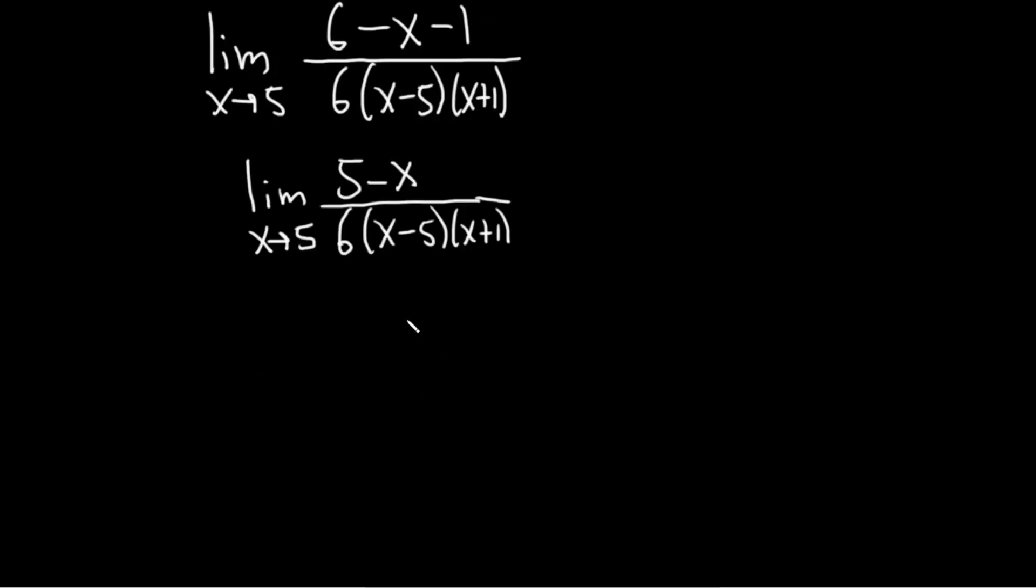This is equal to the limit as x approaches 5. And now what we can do is we can factor out a negative 1 from this piece here. The reason we're going to do that is because we have a 5 minus x here, but we would like it to be x minus 5 so that they cancel. So we can plug in the 5. So I'll put a negative 1 here.